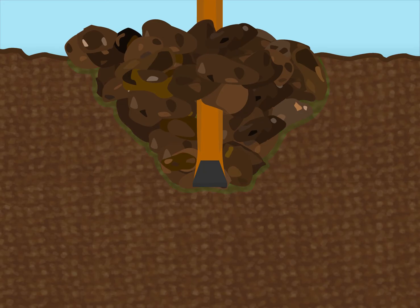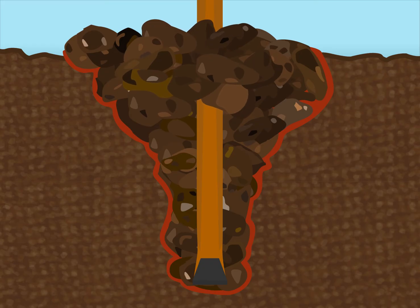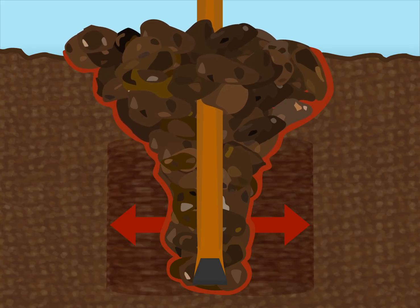Ripping too deep changes the shape of the breakout from a V to a Y, as the overburden pressure is too great to fracture from the tip of the point. This damages soil either side of the tine as fracturing pressure is forced sideways, compressing and smearing the sidewalls of the rip line.